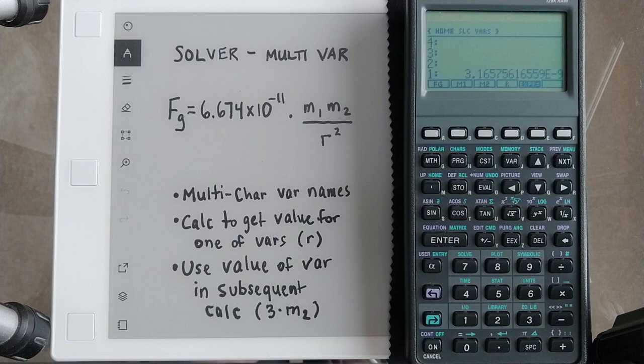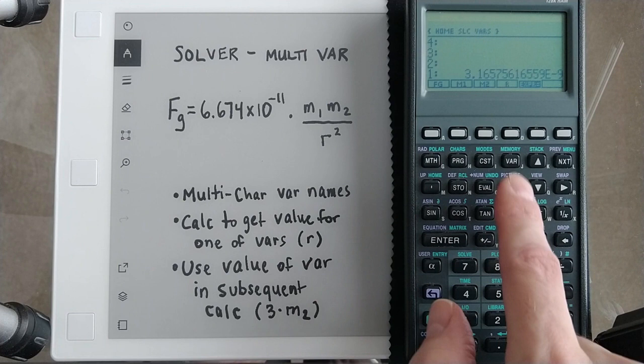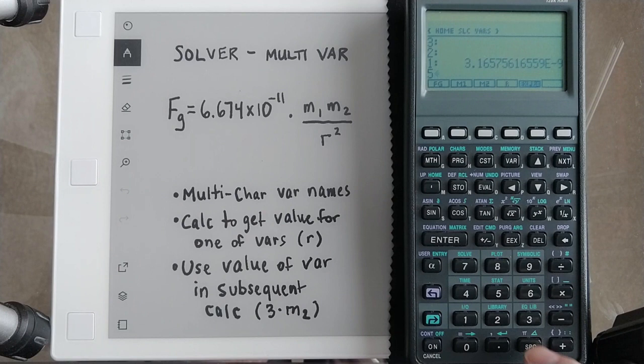So these each are storing a number right now. And if I hit green, it pulls it to the stack. And then I can just say, well, I forget what I said now. But let's say it was five times that amount of gravity. I do five and then hit times. And then I have that answer.